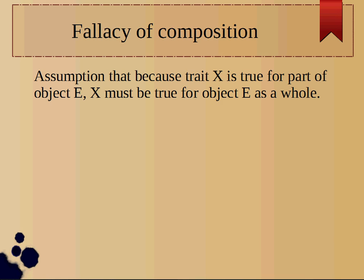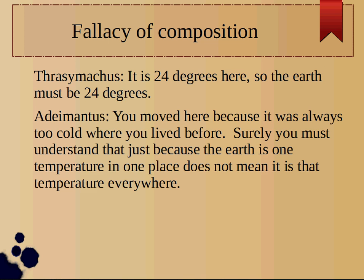The fallacy of composition occurs when someone assumes that because some trait X is true for part of an object E, that X must be true for the object E as a whole. We have three examples of this fallacy.